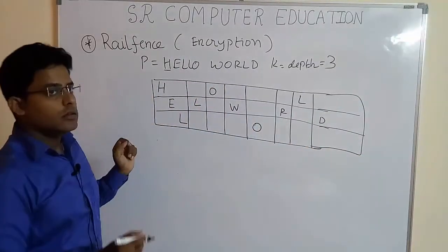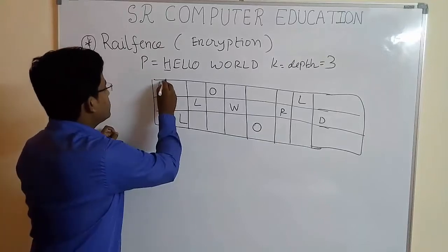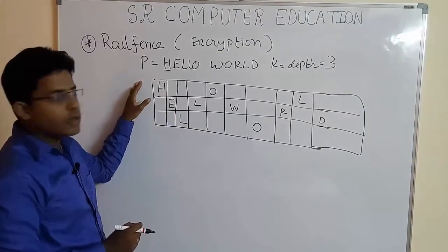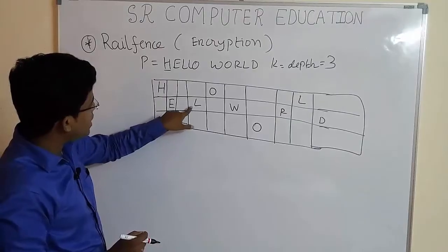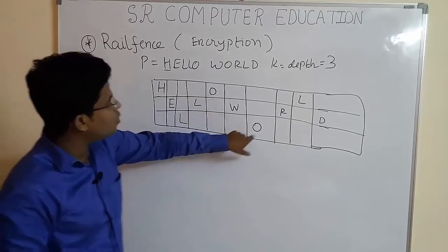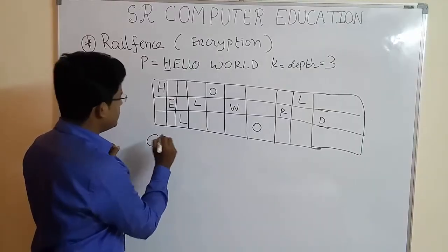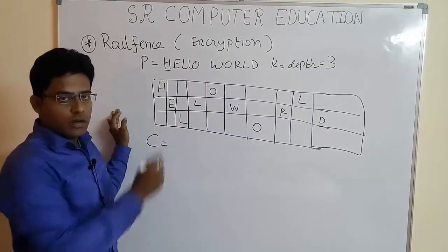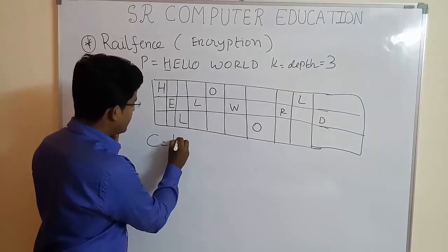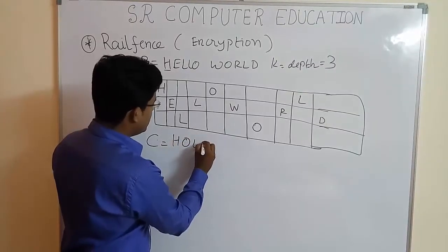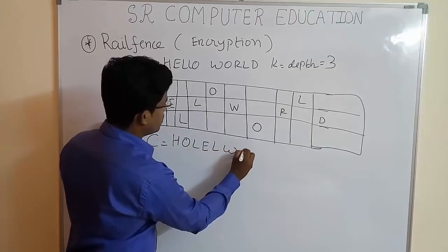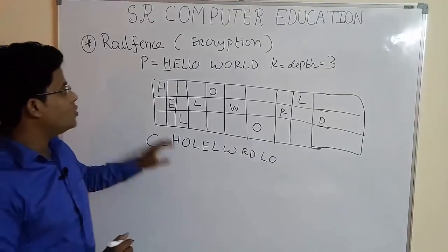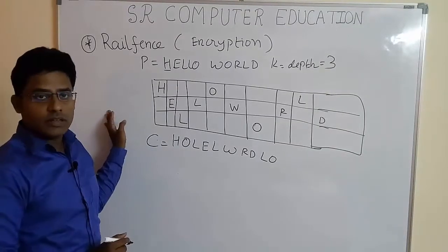Now the ciphertext is you have to write first row elements first, then second, then third as we did in previous example when the depth was 2. So the ciphertext is H O L E L W R D and L O. So this is how you do encryption when the given depth is 3.